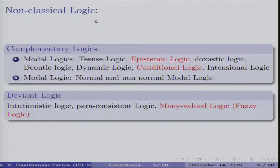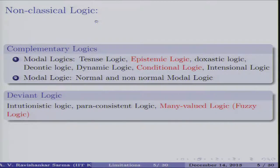Non-classical logics have emerged in response to these defects in classical logic. There are many such logics: modal logics, tense logics for time, epistemic logic for knowledge and belief, doxastic logic for belief, deontic logic for obligation and what is forbidden, dynamic logics, conditional logic, intentional logic, and more. Depending on the usage and the kind of inferences to be captured, we make use of these different kinds of logics. These are essentially extensions of classical logic.